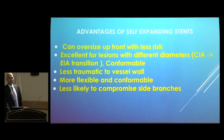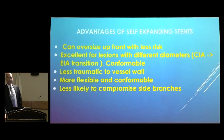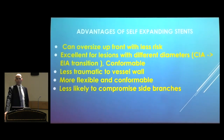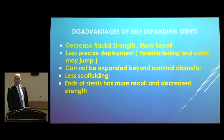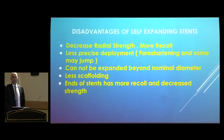Self-expanding stents, which I use in the external iliac, allow oversizing upfront with less risk — meaning you can always over-expand beyond the reference vessel diameter. They're excellent for lesions with different diameters, are conformable, less traumatic to the vessel wall, more flexible, and less likely to compromise side branches because the stent struts are larger. The disadvantage is decreased radial strength, more recoil, and less precise deployment. They tend to foreshorten and may jump if not controlled. The ends of the stent have more recoil and decreased strength.